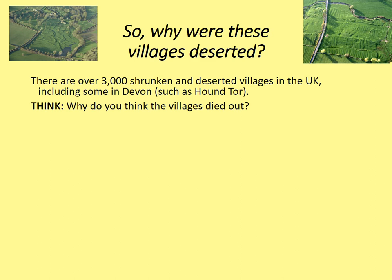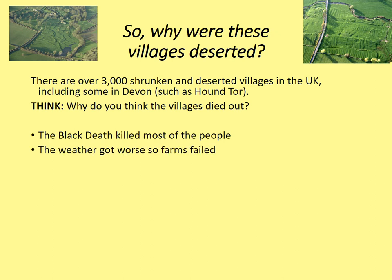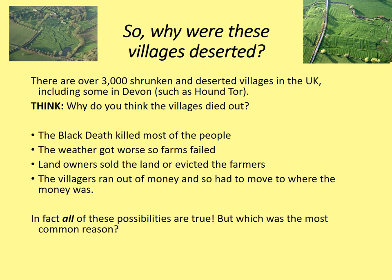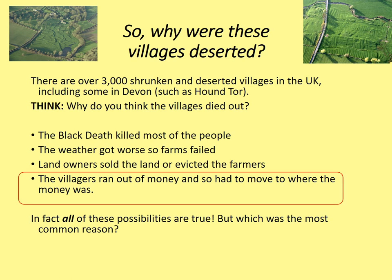There are over 3,000 shrunken and deserted villages in the UK, including some in Devon such as a place called Hound Tor, which is up on Dartmoor. Why did these villages die out? Is it because the Black Death killed most of the people? Is it because the weather got worse and the farms failed? Or is it because landowners evicted the farmers? Perhaps the villagers ran out of money and had to move to where the money was. In fact, almost all of these possibilities are true, but the most common reason these villages shrunk or were deserted is because the villagers ran out of money and had to move. The idea that deserted medieval villages were all deserted because of the Black Death killing everyone is, for the most part, not true.